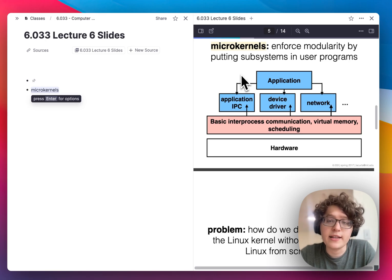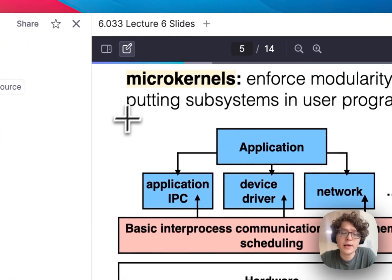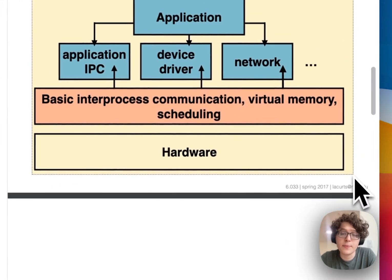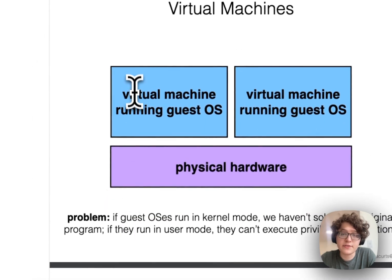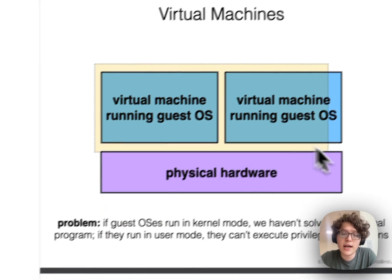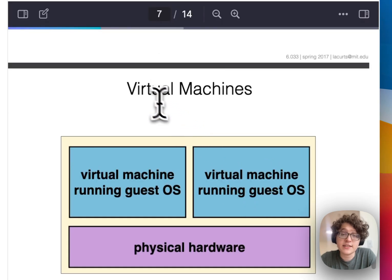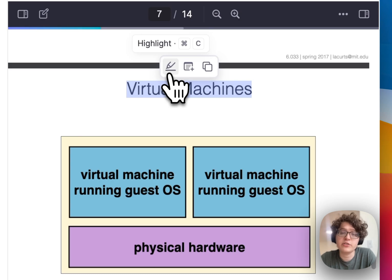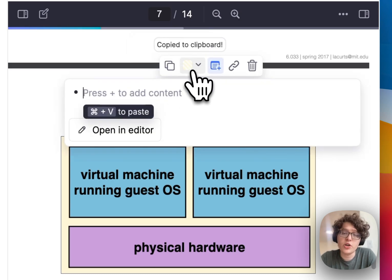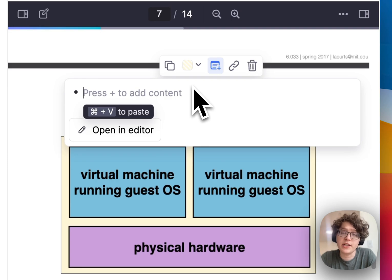I can also make highlights of any image just by clicking the area highlight button and then dragging over a box of the part I want to remember. Alternatively, I can do that even faster by just holding down Alt and immediately dragging. After selecting text, there are a few options in the highlight popup — I can either directly create a highlight or press 'Note' and immediately begin taking notes directly on the PDF itself.